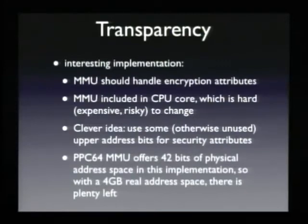The address bits which come out of the MMU are more than what are required to address all the memory. The Xbox has 512 megabytes of RAM plus a bit of PCI space, so with 4 gig of real address space, that's all you need. So you have some address bits left, and those address bits are used to control the encryption and hashing mechanism.